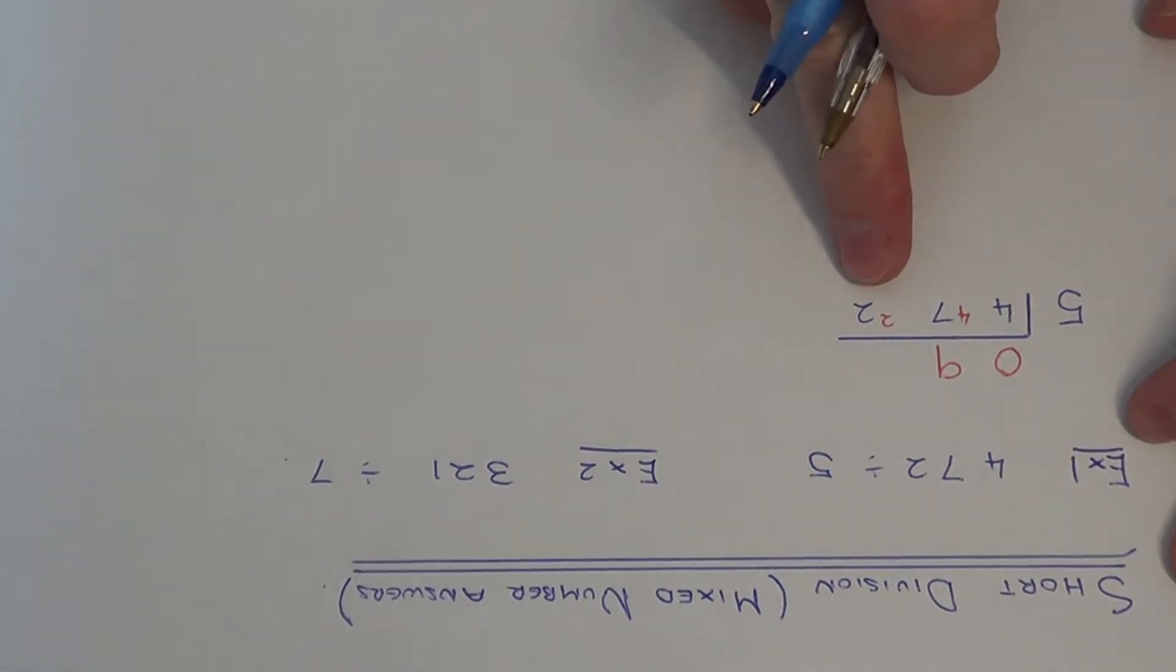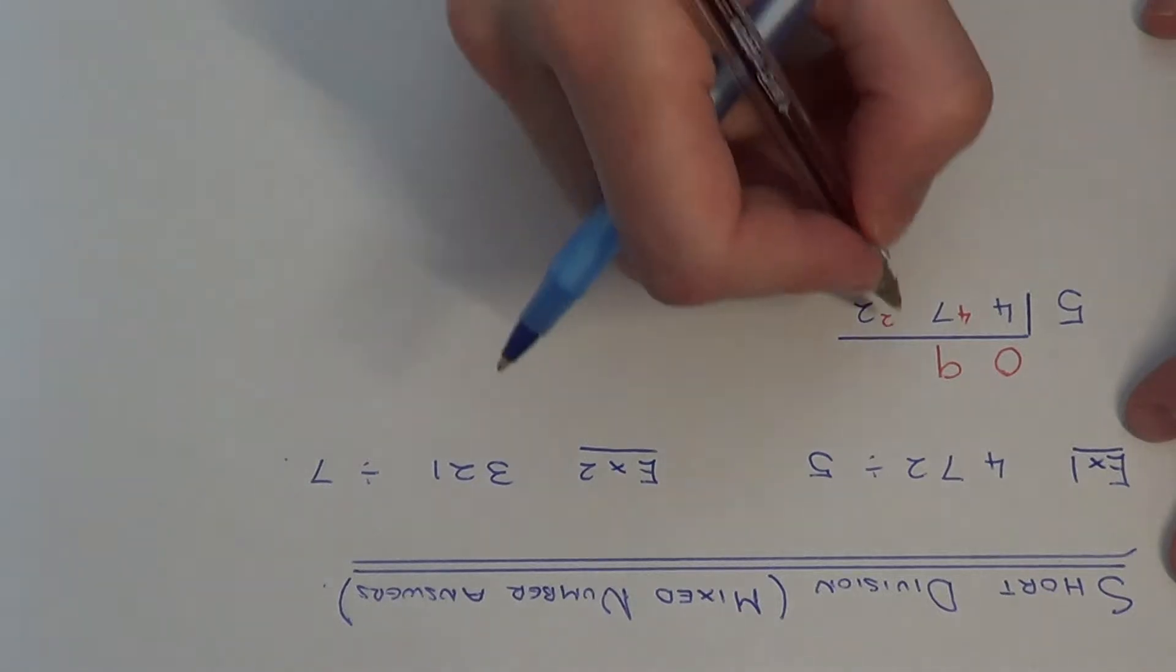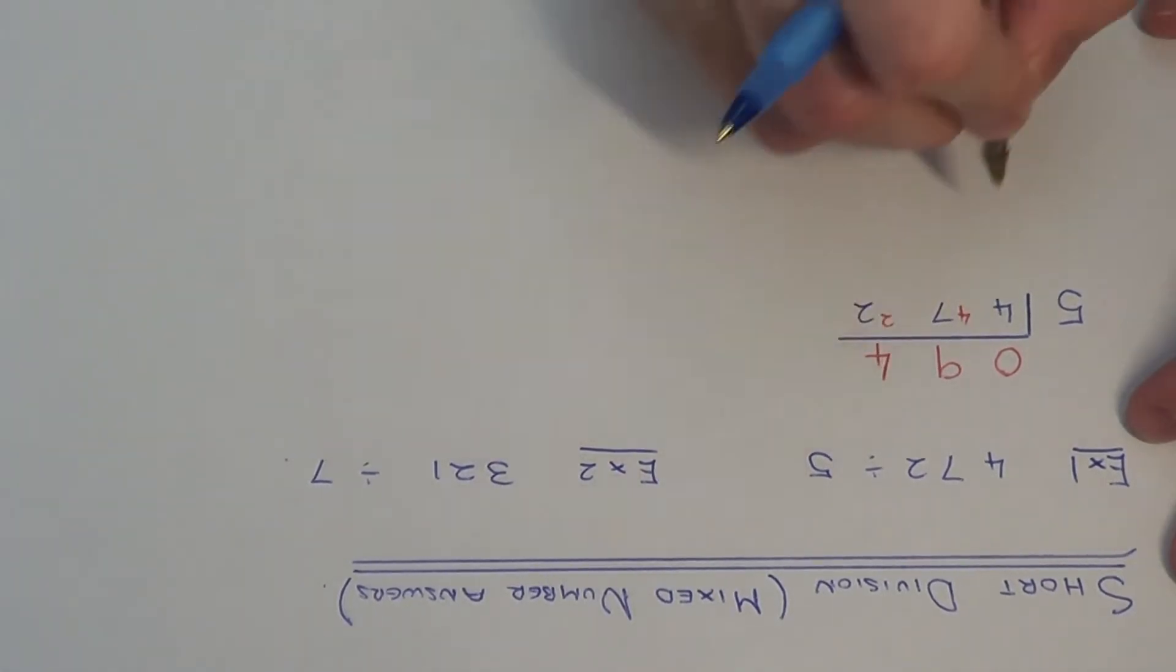And finally we have 22 divided by 5. This goes 4 times and the remainder is 2. So we put the 4 at the top.